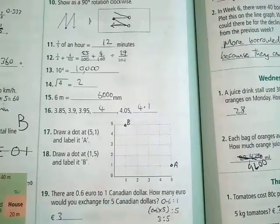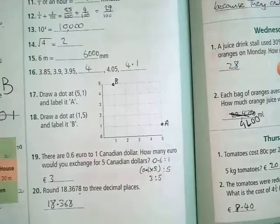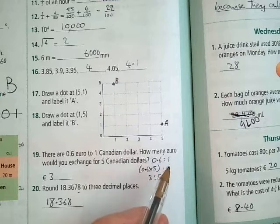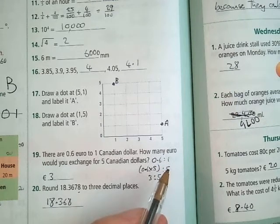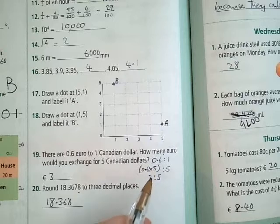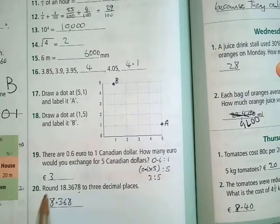Question 19: there are 0.6 euros to 1 Canadian dollar. How many euros would you get for 5 Canadian dollars? So the ratio is 0.6 to 1. So then if you change that to 5, you have to multiply this by 5. 0.6 multiplied by 5, and that's 3. So it's 3 to 5. So your answer is 3 euros.